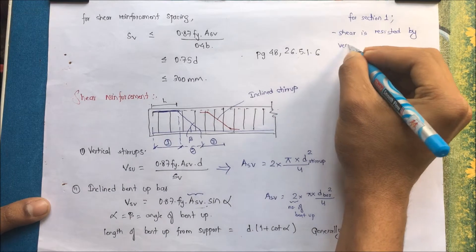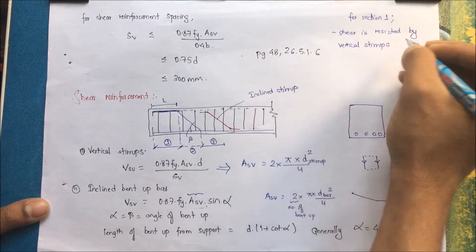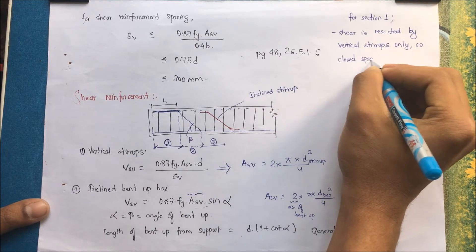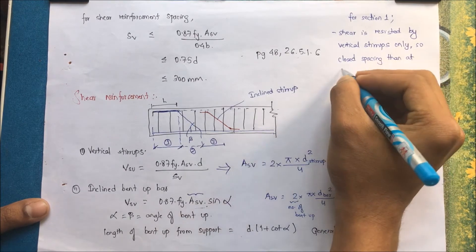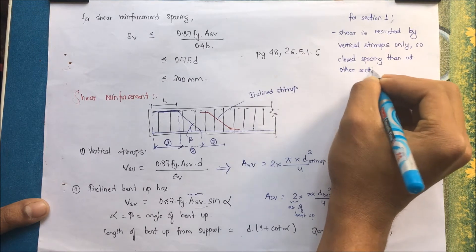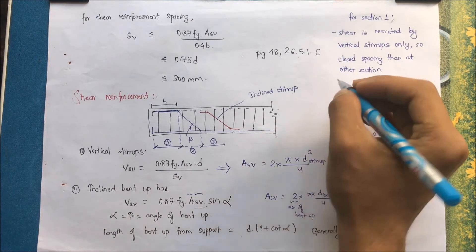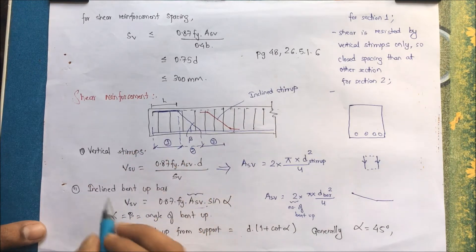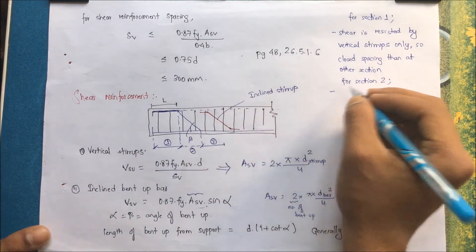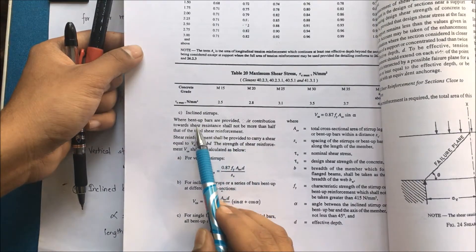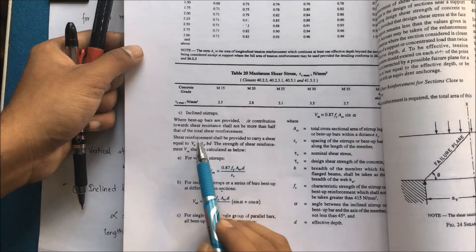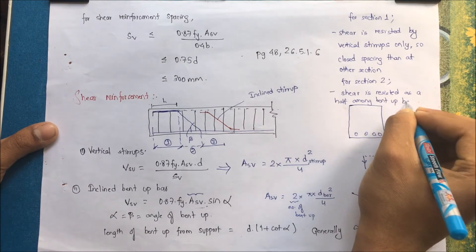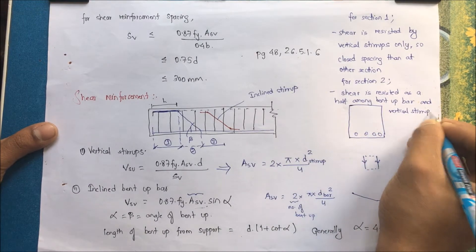In Section 1, shear is resisted by vertical stirrups only, so close spacing is required — much less than at other sections. For Section 2, as per the code, when a bent-up bar is provided, shear resistance is shared equally between the bent-up bar and the vertical stirrups at that section.